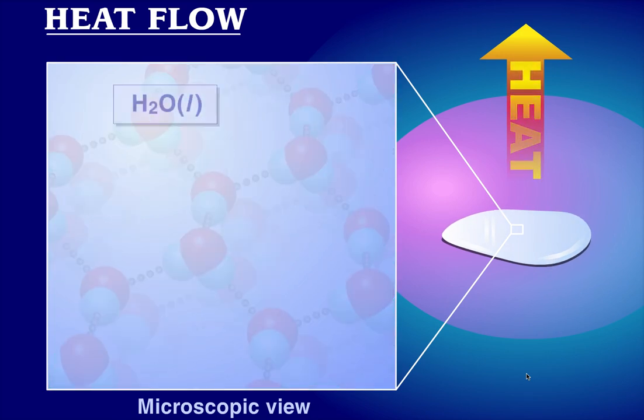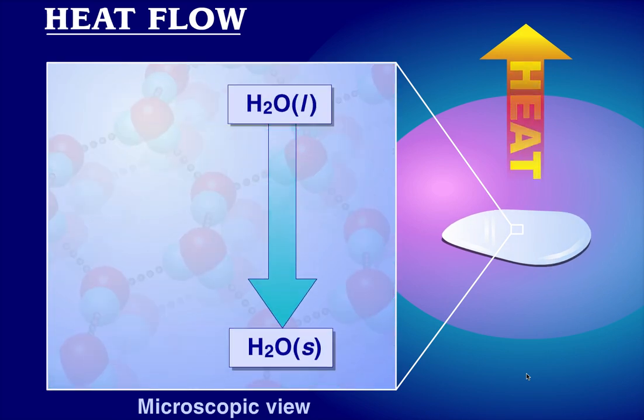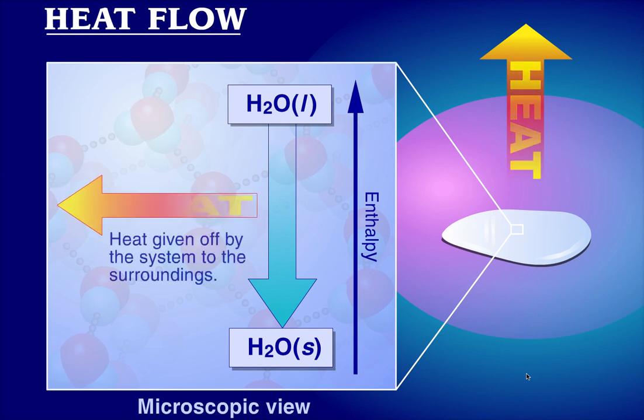Measurements show that for every mole of liquid water converted to ice at zero degrees Celsius and a pressure of one atmosphere, 6.01 kilojoules of energy must be given off by the system to the surroundings.